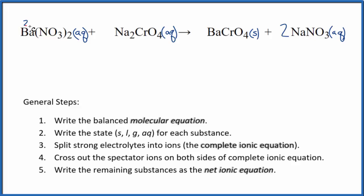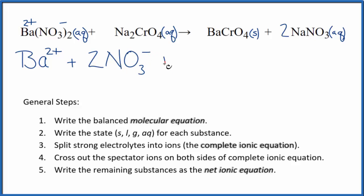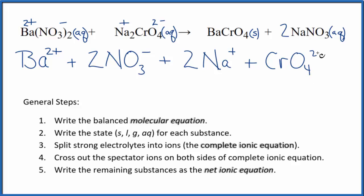Now we can split the strong electrolytes into their ions for the complete ionic equation. Barium, group 2 on the periodic table, is 2+, and the nitrate ion is 1−. We have Ba²⁺ plus two nitrate ions. Sodium, group 1, is 1+, and the chromate ion CrO₄ is 2−. You either memorize that or look it up on a table. So we have two sodium ions and one chromate ion, CrO₄²⁻.